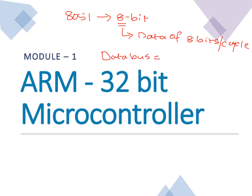If the data bus is 8-bit, we call it an 8-bit microcontroller or microprocessor. If it is 16-bit or 32-bit, it is called a 16-bit or 32-bit microcontroller or microprocessor accordingly. Right now we are studying the ARM 32-bit microcontroller, which means it can handle 32-bit data in a given cycle at a time.